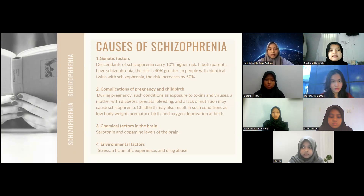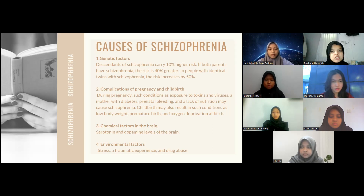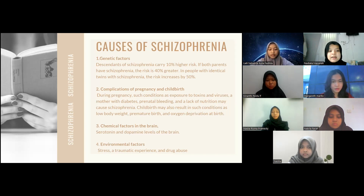Complications of pregnancy and childbirth can also cause schizophrenia. During pregnancy, conditions such as exposure to toxins and viruses, a mother with diabetes, prenatal bleeding, and a lack of nutrition might cause schizophrenia. Childbirth complications may also result in low body weight, premature birth, and oxygen deprivation at birth.